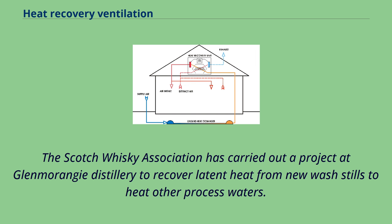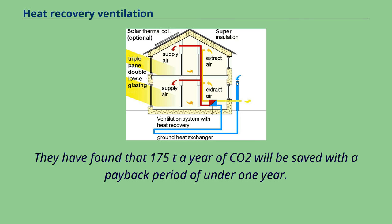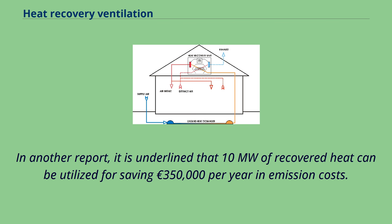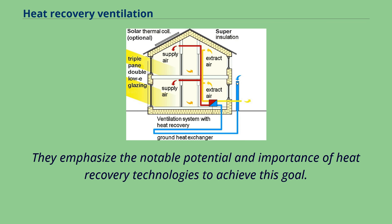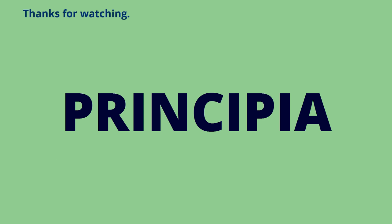The Scotch Whiskey Association carried out a project at Glenmorangie Distillery to recover latent heat from new wash stills to heat other process waters, finding that 175 tonnes per year of CO₂ will be saved with a payback period of under one year. In another report, it is highlighted that 10 MW of recovered heat can be utilized for saving €350,000 per year in emission costs. The UK Climate Change Act of 2008 targets a 34% reduction in greenhouse gas emissions by 2020 compared with 1990 levels, and an 80% reduction by 2050, emphasizing the notable potential and importance of heat recovery technologies to achieve this goal.